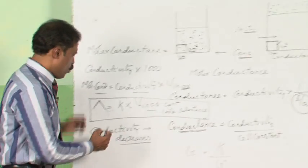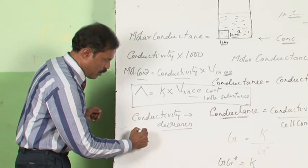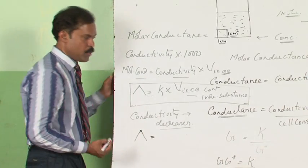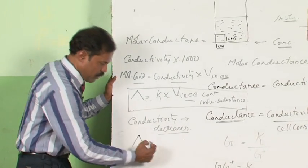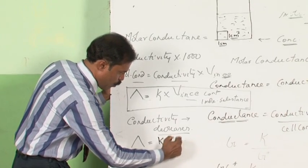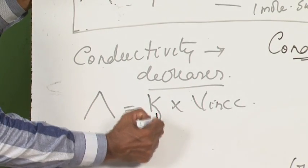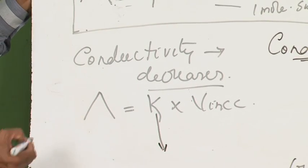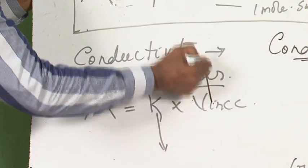But at the same time, what happens to the molar conductivity with dilution? Since molar conductance is kappa into volume in cc containing 1 molar substance, we have seen that this term is decreasing with dilution, but this term is increasing with dilution.